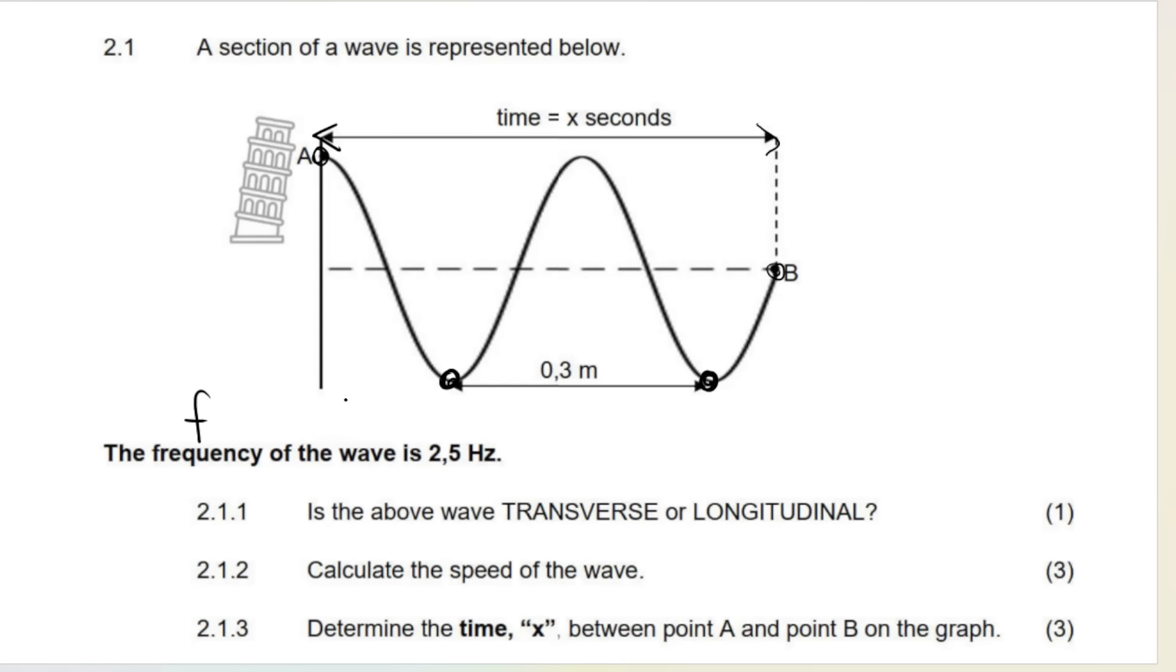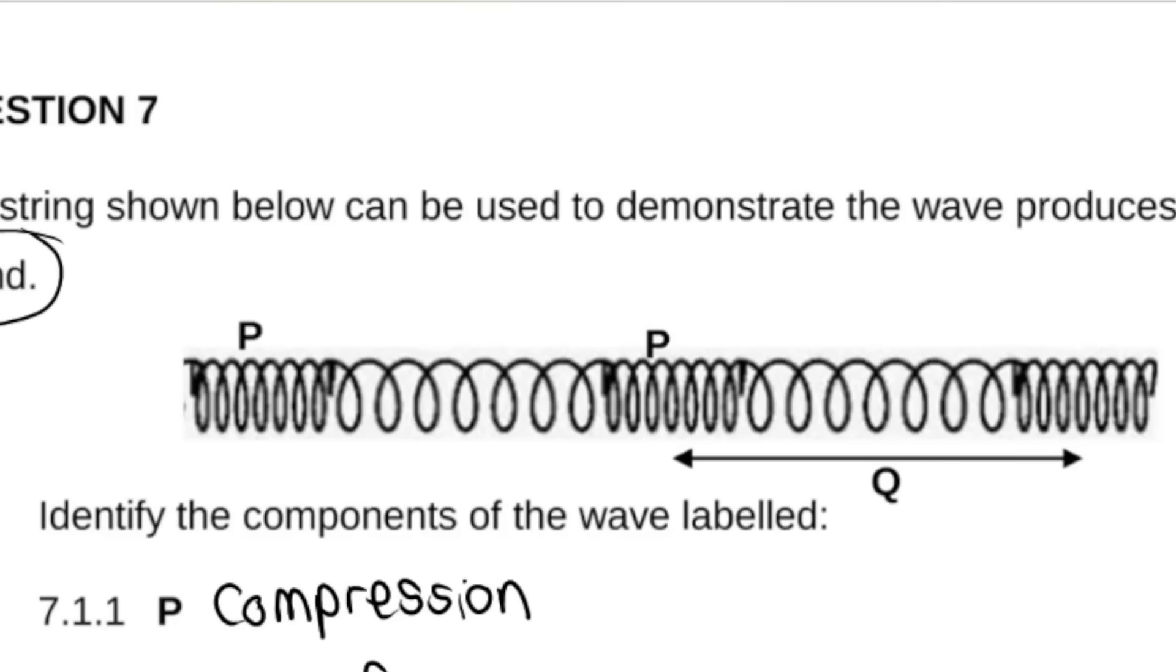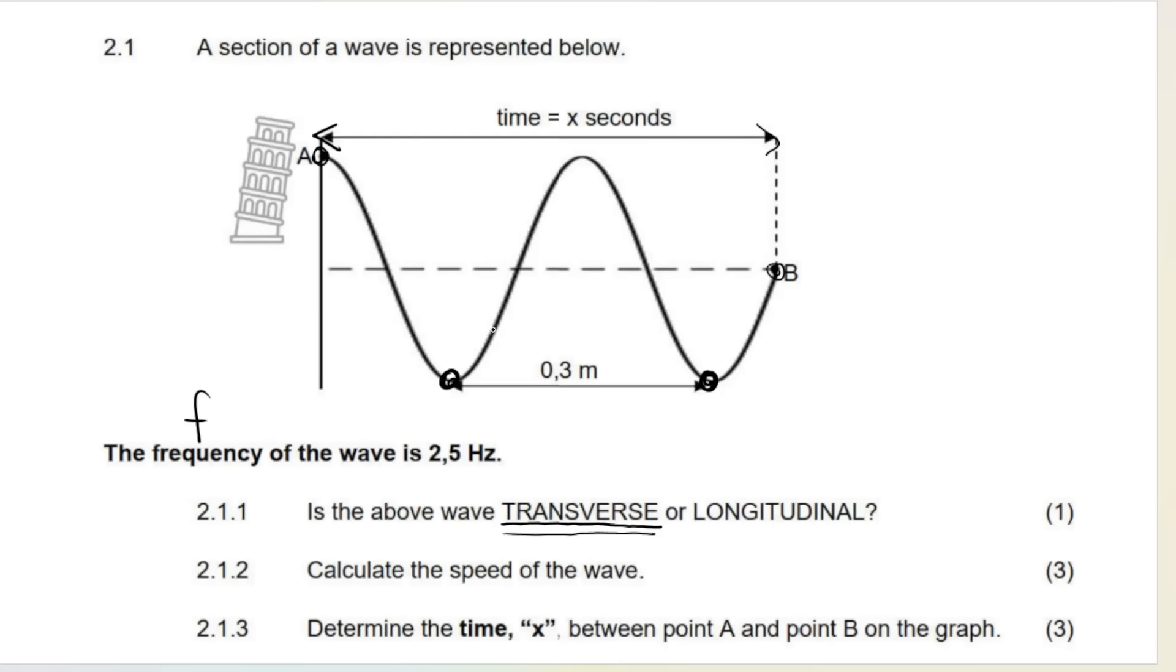First of all, 2.1.1: is the above wave transverse or is it longitudinal? You will tell me that it is transverse. Looks like a transverse wave. Remember transverse waves are like ripples in a pond, ocean waves, we often represent them like this. Longitudinal waves, those are often represented in a slightly different way. We will often see them represented like this one over here. I have done a video on past papers for longitudinal waves if you want to check that out, but this one is a transverse wave. Although transverse and longitudinal, they're both mechanical waves. Remember they both need a medium to travel through.